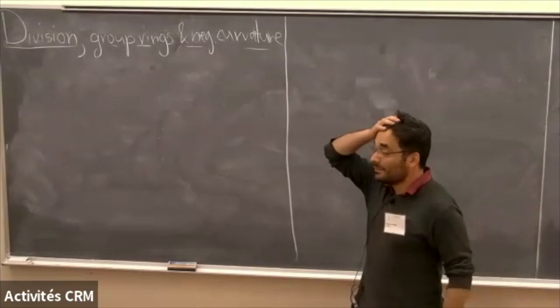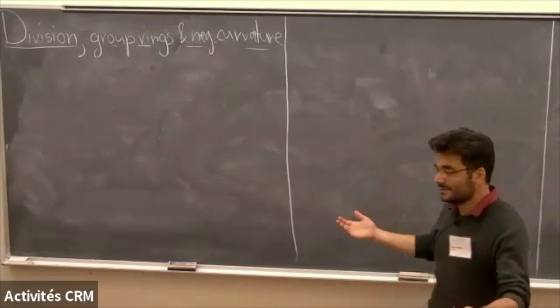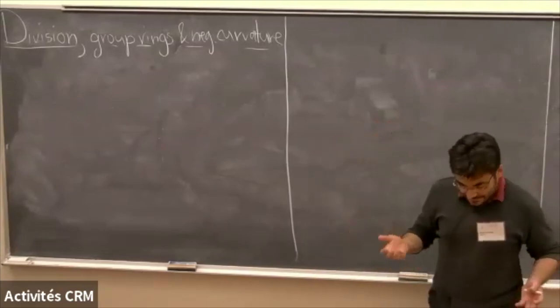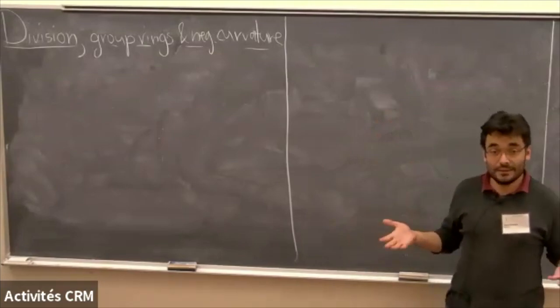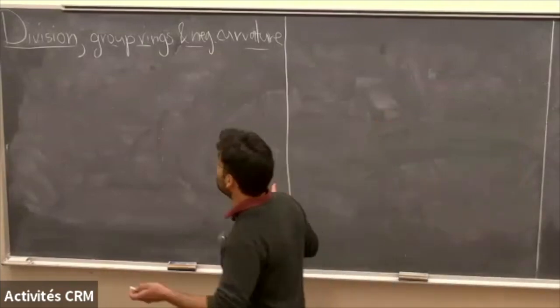The place where I want to start is a very classical question: if you have two two-dimensional spaces, how do you tell whether or not they're homotopy equivalent?